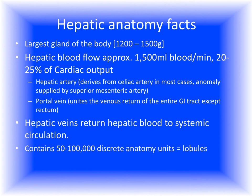The liver is the largest gland in the body and weighs approximately 1.2 to 1.5 kg. Total hepatic blood flow represents about 20% to 25% of cardiac output. The hepatic artery, which derives from the celiac artery in most cases but can also originate from the superior mesenteric artery, is one of the incoming blood vessels. Blood flow is also provided by the portal vein, which drains the venous return from almost the entire GI tract except the rectum, bringing nutrient-rich blood. The hepatic veins return the hepatic blood to the systemic circulation.